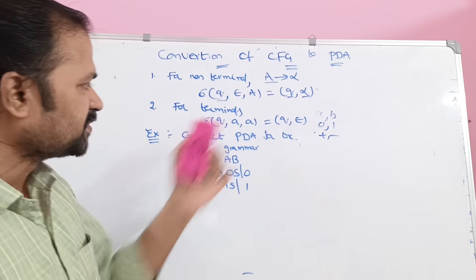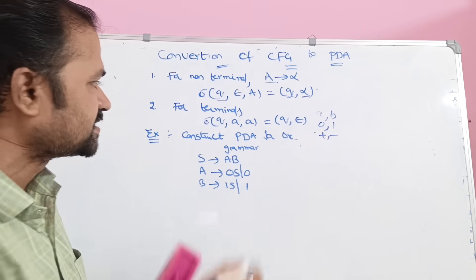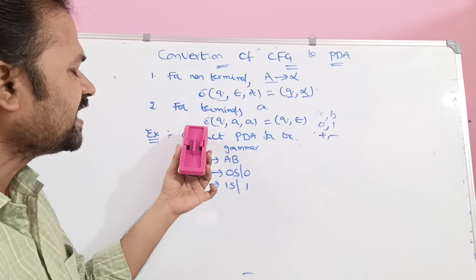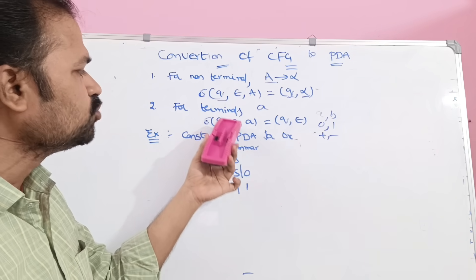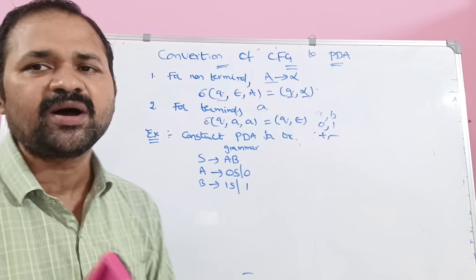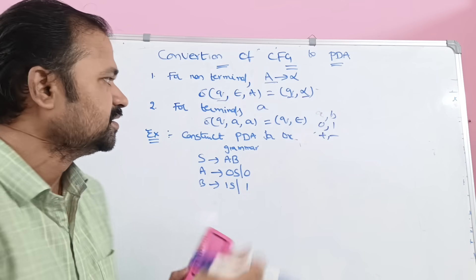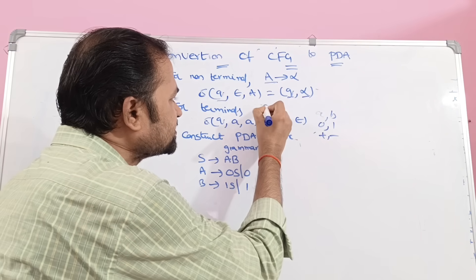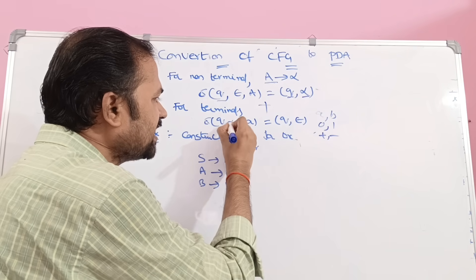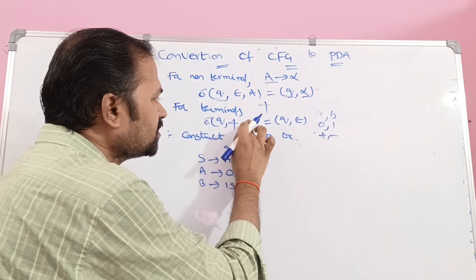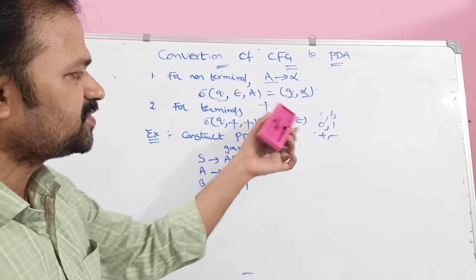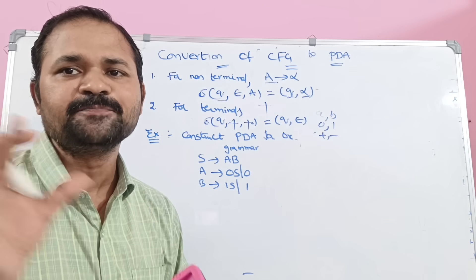For the terminal, the rule is like this: if the terminal symbol is A, then we can write it as delta of (Q, A, A) = (Q, epsilon). Suppose if the terminal symbol is plus, then we can write it as delta of (Q, plus, plus) = (Q, epsilon). Simply, we need to follow those two rules.